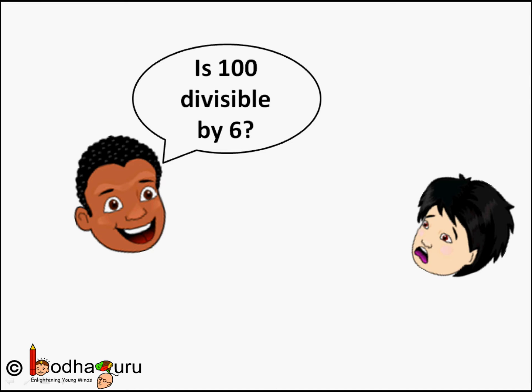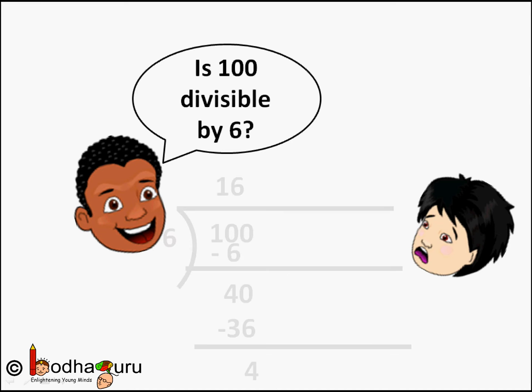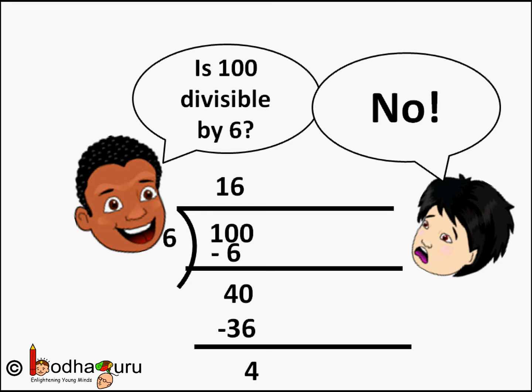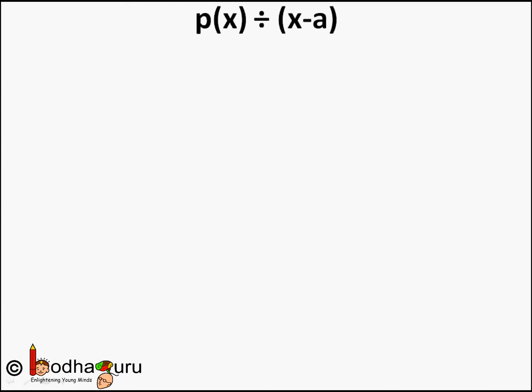Hello friends. If someone asks you whether 6 is a factor of 100 or not, you would just divide 100 by 6 and say no — there would be 4 as a remainder. Whereas 5 is a factor of 100 because 100 divided by 5 gives a remainder of 0. So this is a general way to find whether a number is a factor of another number.